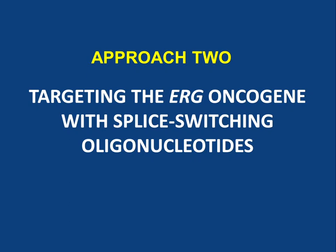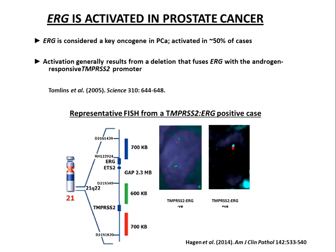The second approach uses antisense technology — specifically, splice switching oligonucleotides to target the ERG oncogene. The ERG oncogene is considered a key oncogene in prostate cancer, activated in a staggering proportion of cases — something like 50%, one in two. This oncogene encodes a transcription factor — proteins that regulate the transcription and activity of genes. It gets activated in prostate cancer because the ERG gene is closely located to another gene called TMPRSS2, which encodes a serine protease with an androgen-responsive promoter.